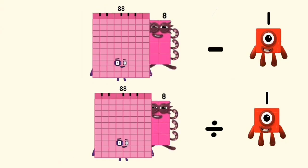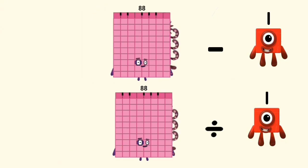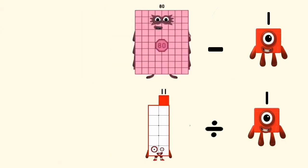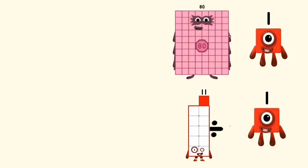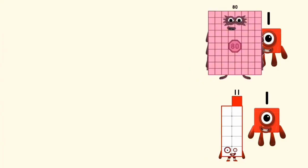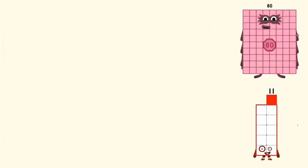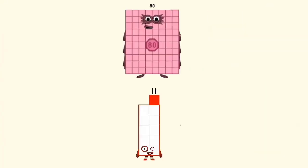88 minus and divided by 8 equals 80 and 11. 80 minus 1 and 11 divided by 1 equals 79 and 11.